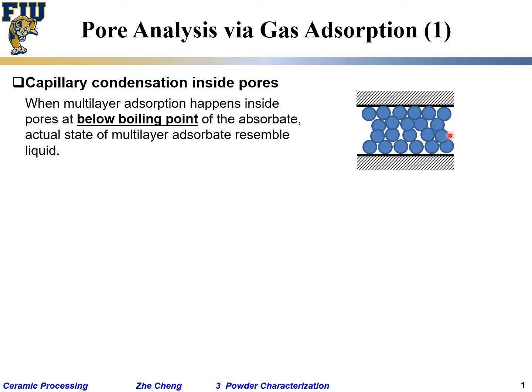To mathematically describe this, we make a simple assumption: assume the pores are cylindrical in shape, because that's easier to describe with a constant radius. If they were spherical pores with many connections it would be more complex, so for simplicity we assume it's like a cylinder.